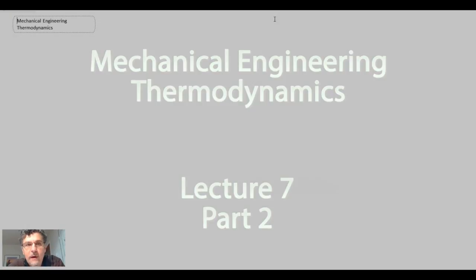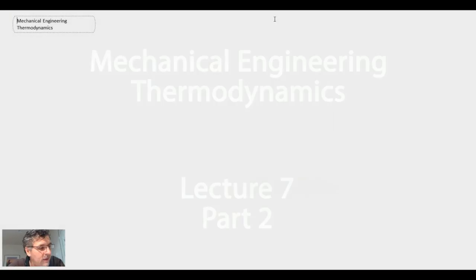The next thing we're going to take a look at is the Carnot heat engine. This is a heat engine that operates on four reversible processes, and consequently it is an idealization. However, it's a very famous one that we quite often refer to within thermodynamics. So let's take a look at the Carnot heat engine.